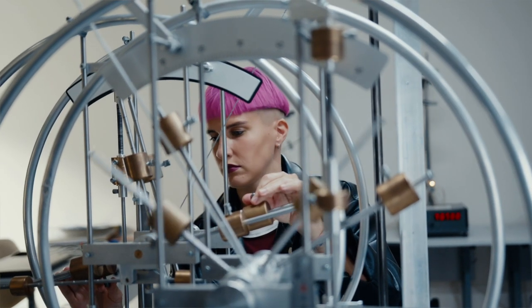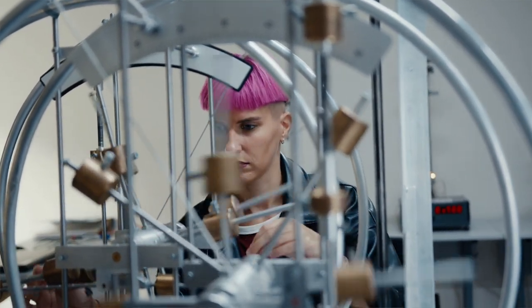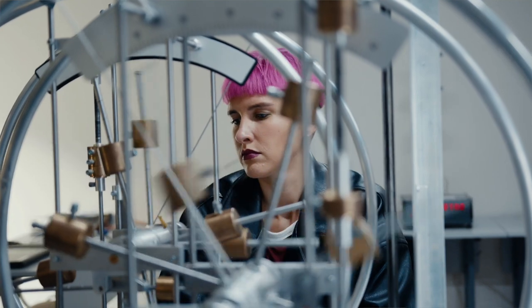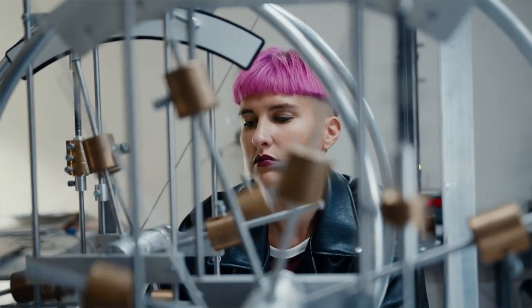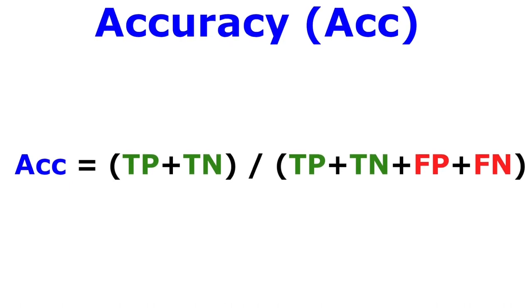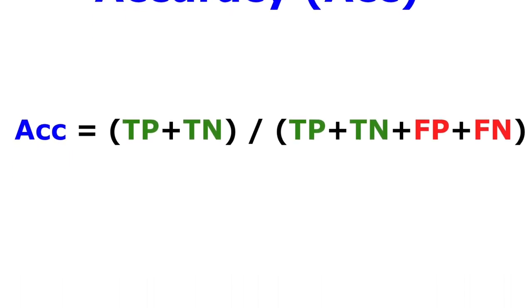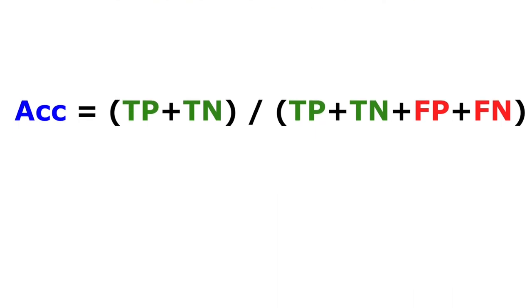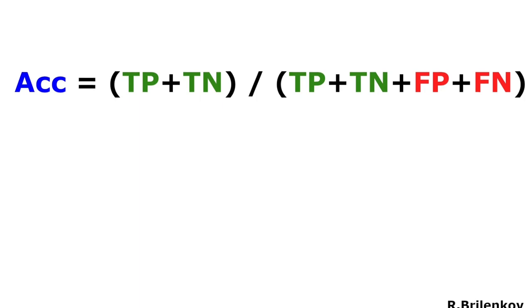The first performance evaluation metric is called accuracy, which is defined as the number of correct predictions, which are true positives plus true negatives, made by the model over all kinds of predictions made. Here's the equation. The higher the number of correct predictions made by our model, the higher the value of accuracy.